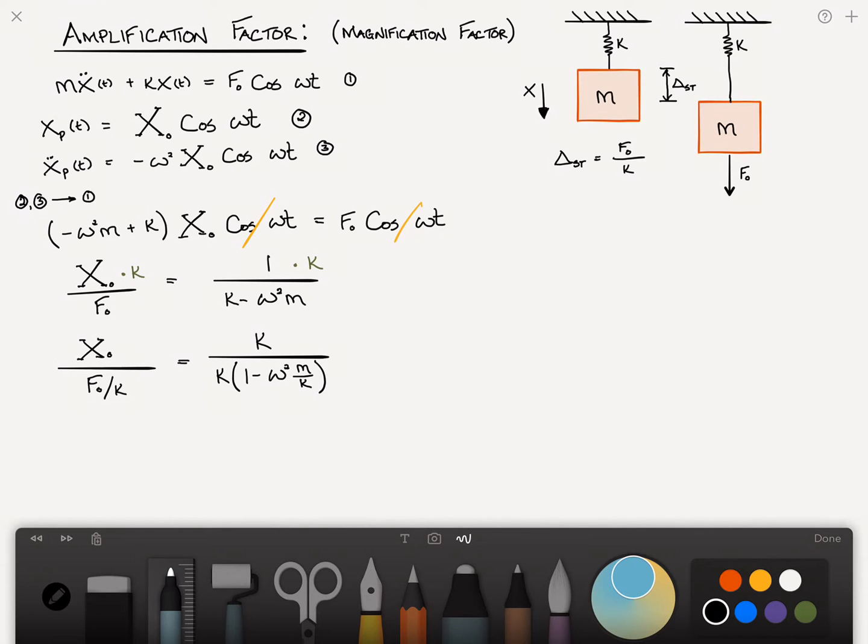But we know what this is. That's the static deflection. And we also know what m over k is, right? We know that omega n squared, the natural frequency squared, is equal to k over m. So we can rewrite this equation. We'll call this one equation four.